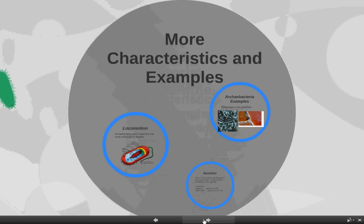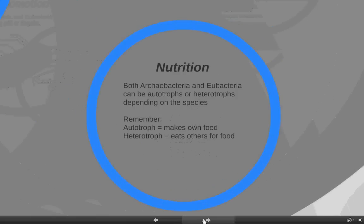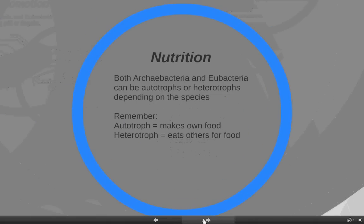A couple more characteristics. First, the way they get nutrition: both archaeobacteria and Eubacteria can be autotrophs or heterotrophs. It just depends on which species it is. They're all microorganisms — all single-celled — but some can make their own food and some have to rely on eating others. That is the difference between an autotroph and a heterotroph.